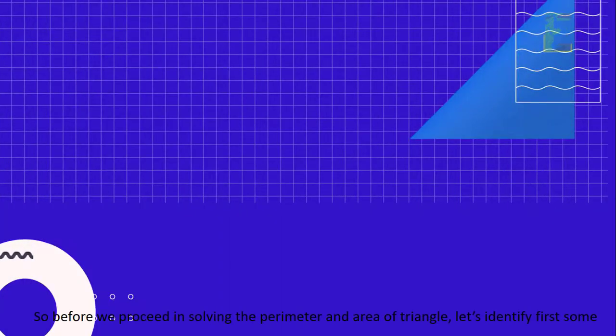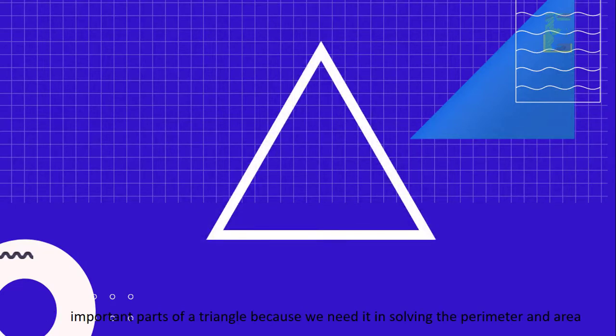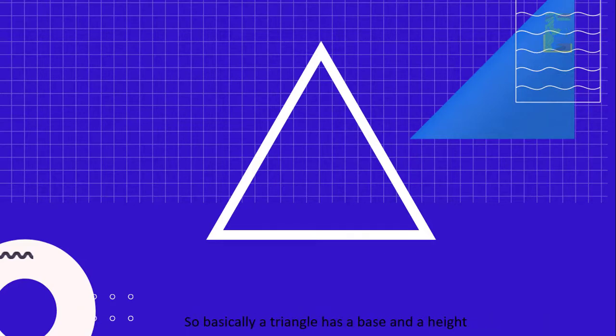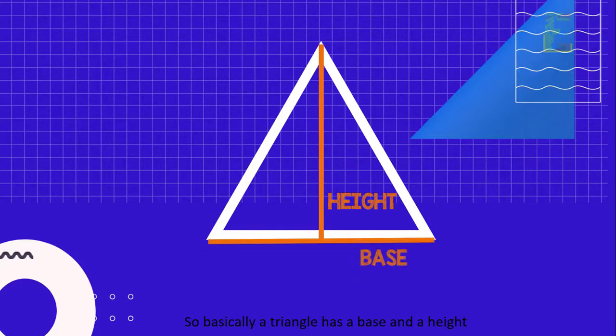So before we proceed in solving the perimeter and area of triangle, let's identify first some important parts of a triangle, because we need it in solving the perimeter and area. So basically, a triangle has a base and a height.